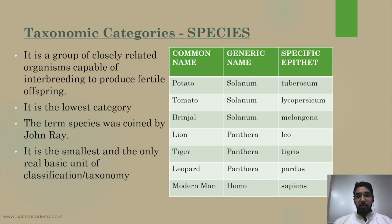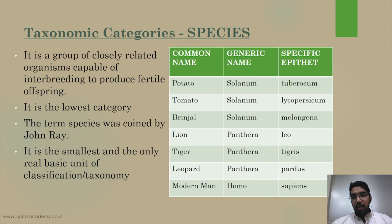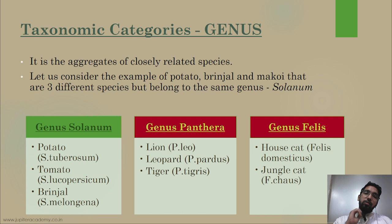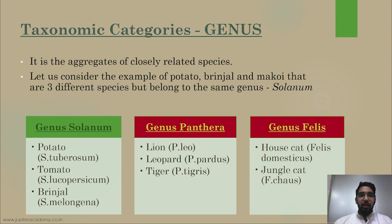The species names of different organisms: potato, tomato, and brinjal all have the same genus name — they come under genus Solanum — but different species names. Potato is Solanum tuberosum, tomato is Solanum lycopersica, and brinjal is Solanum melongena. Genus is a group of species which show similar characters. These three belong to different species but the same genus, Solanum.